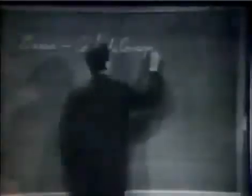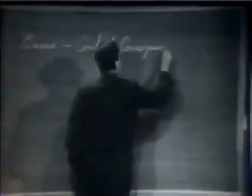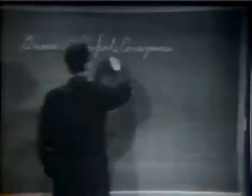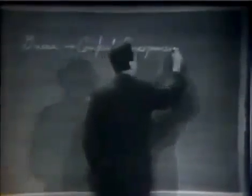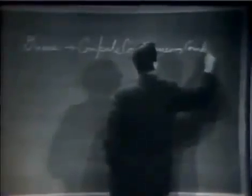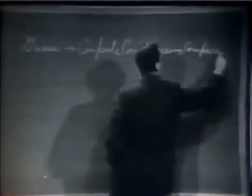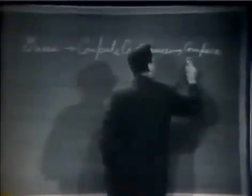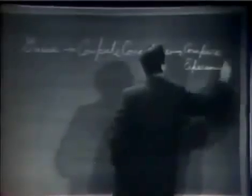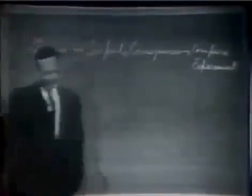Then we compute the consequences of the guess to see what, if this law that we guessed is right, what it would imply. And then we compare those computation results to nature — or we say compare to experiment or experience — and compare it directly with observation to see if it works.